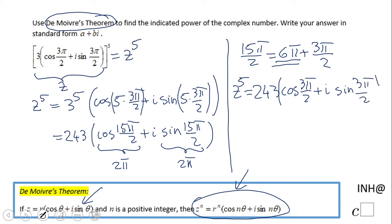But they want the answer in the standard form, so now we can change this, right? 243, and cosine of 3π over 2, that will be negative... no, that will be zero, right?